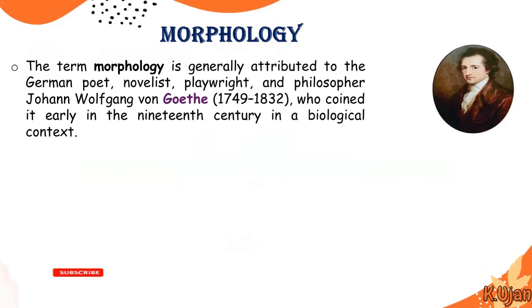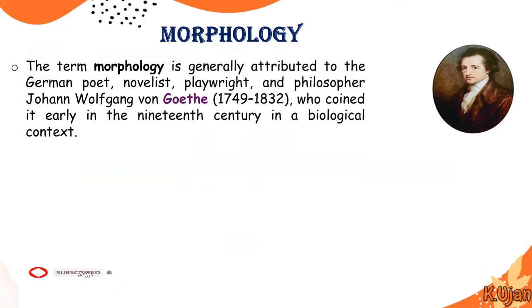Here we are going to talk about the very basics of morphology. The term morphology is generally attributed to the German poet, novelist, playwright, and philosopher Johann Wolfgang von Goethe (1749–1832), who coined it early in the 19th century in a biological context. Basically, morphology came from the subject of biology and was the word coined by Goethe.